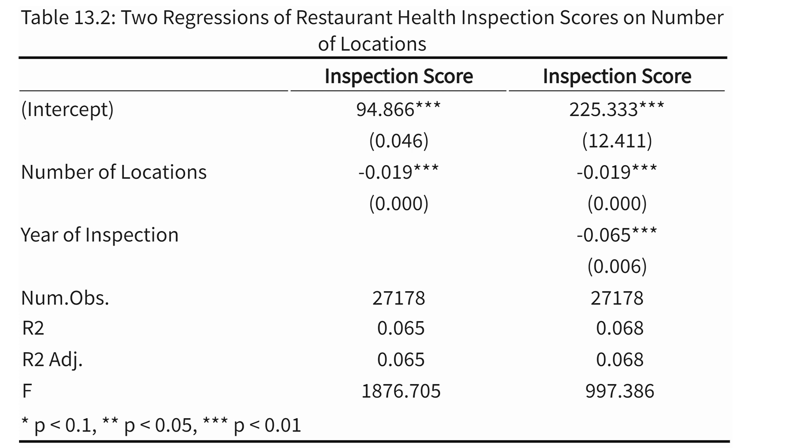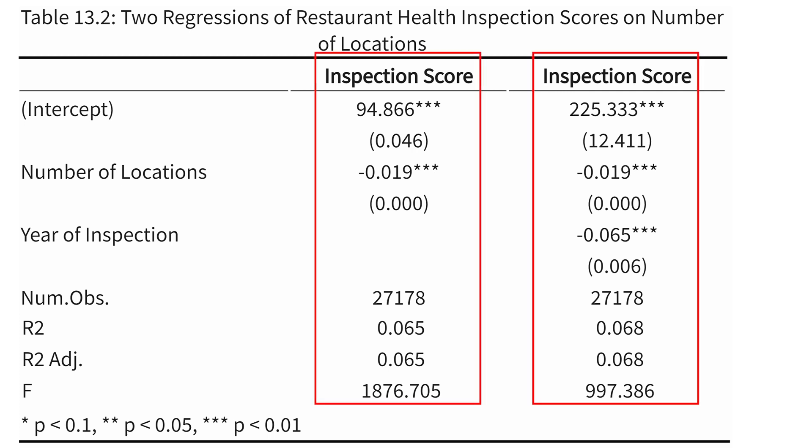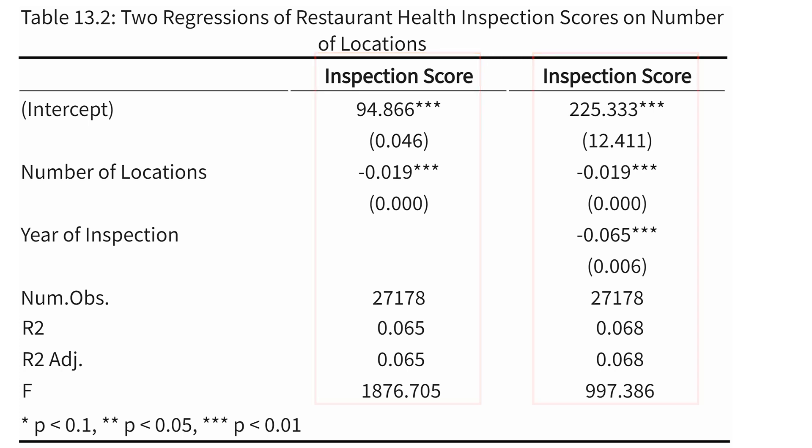So here is an example of a regression table. I've got two regressions here — two columns. Each column represents a different regression that I have run. That's a very standard way of presenting regression results: if you have multiple different models, put each one in a different column.